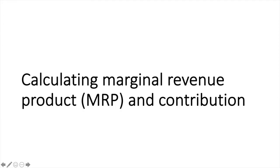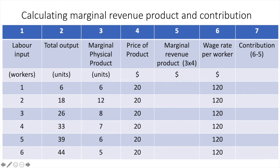Now that we've completed step 1, we can move on to calculating marginal revenue product and contribution. Columns 1 to 4 are identical to what we've just seen. Now I've added columns 5, 6 and 7. Column 6 contains the wage rate per worker, which is constant at $120. This wage rate is set in the perfectly competitive labour market. Later on in this unit, you'll see how wages are determined in perfectly competitive markets. For now let's work with a constant wage rate of $120.